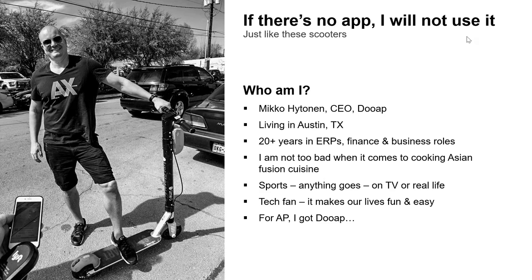My name is Miko Hightonin. I live in Austin, Texas. I have around 20 years of experience in ERPs, finance, and business roles. When I get some spare time, I'm really into cooking and Asian fusion cuisine is kind of my specialty. I'm also a sports fan and a tech fan, and obviously when it comes to AP and AP automation, that's the go-to for me.